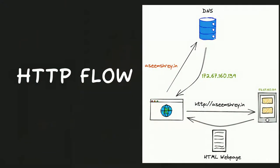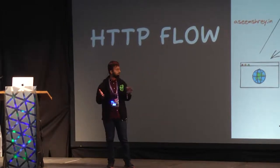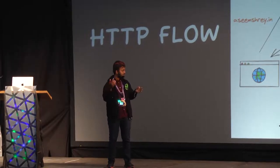Let's see what happens — this is an oversimplified version. This is your browser, and let's say you go to my website, asimstray.in. The very first thing that happens is that machines understand only numbers — they don't understand what asimstray.in is. So asimstray.in gets translated to a number called the IP address, the internet protocol address. That number is basically the address where my website is hosted. The browser gets the IP address from the DNS server and sends a request to that machine: please give me the website asimstray.in. The website complies and gives back the HTML web page.